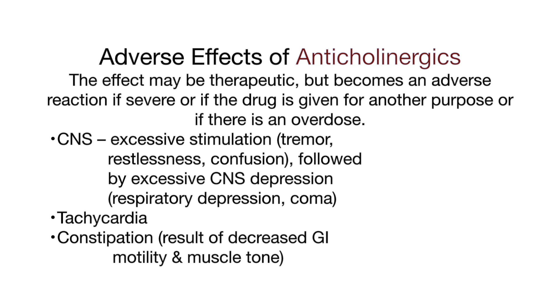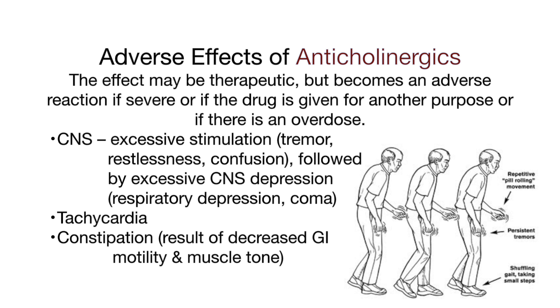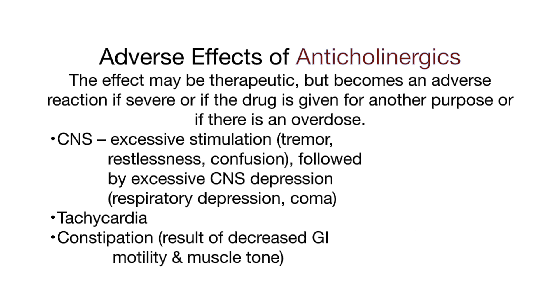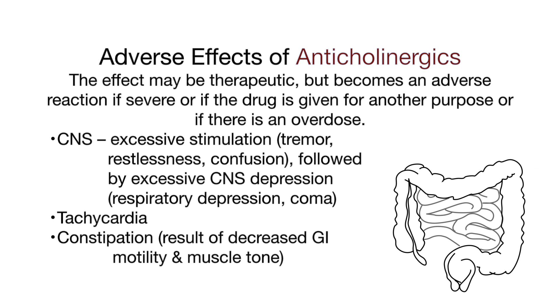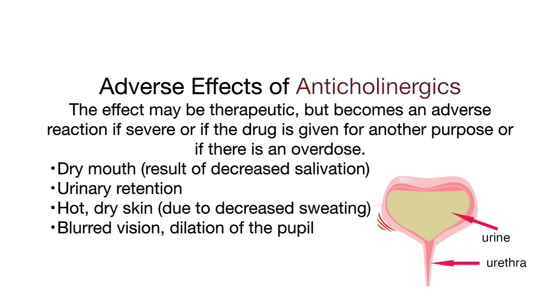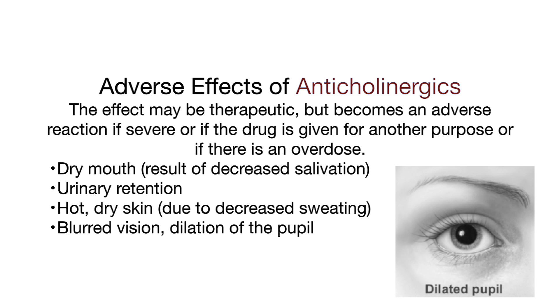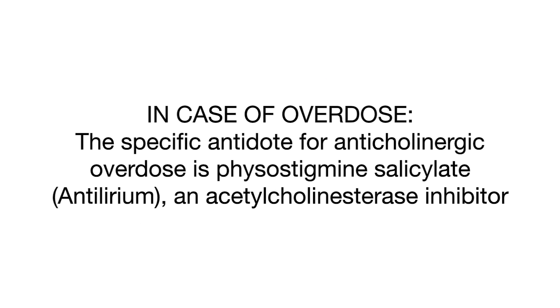The effect of the drug may be therapeutic, but it becomes an adverse reaction if it is severe, if the drug is given for another purpose, or if there is an overdose. On the central nervous system, anticholinergics can cause excessive stimulation such as tremor, restlessness, or confusion, followed by excessive CNS depression, respiratory depression, and coma. They can also cause tachycardia, constipation, dry mouth, urinary retention, hot dry skin, and blurred vision from dilation of the pupil, so the patient may need to wear sunglasses. The specific antidote for anticholinergic overdose is physostigmine salicylate, or antilirium, an anticholinesterase inhibitor.